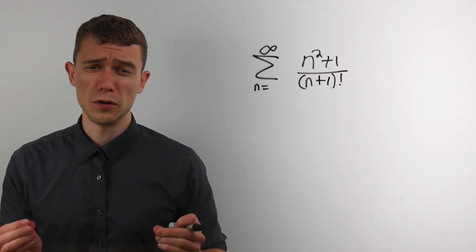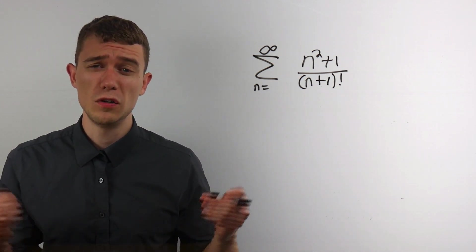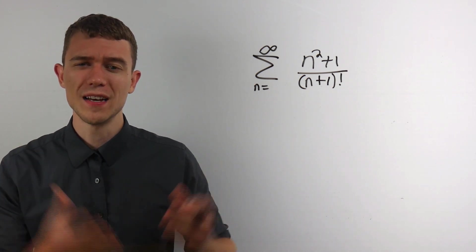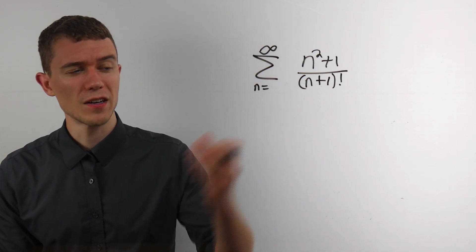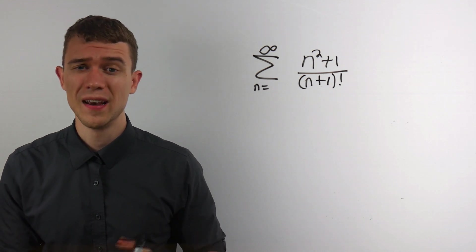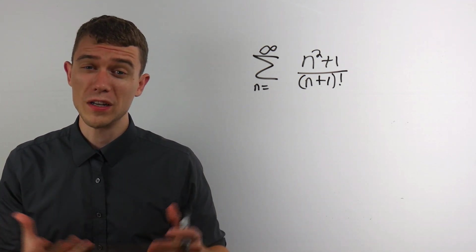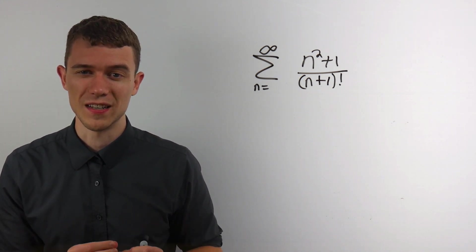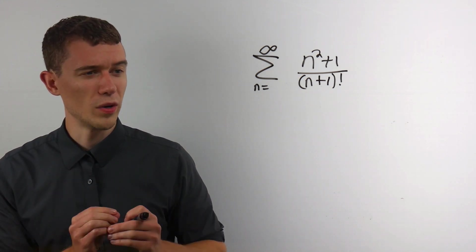To figure out whether this series converges or diverges, we are going to use the ratio test. How do I know that's the test I want to use? Well, there's a factorial in this series. Oftentimes, when there's factorials, the ratio test is a really good one to use, and you'll see why in just a second.